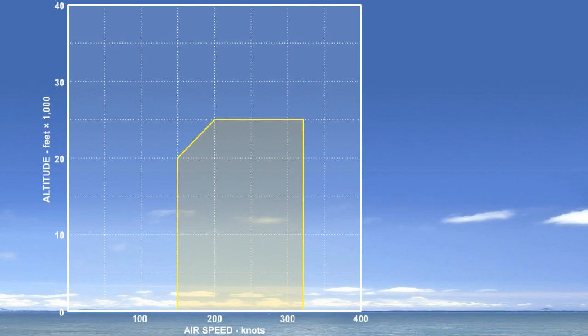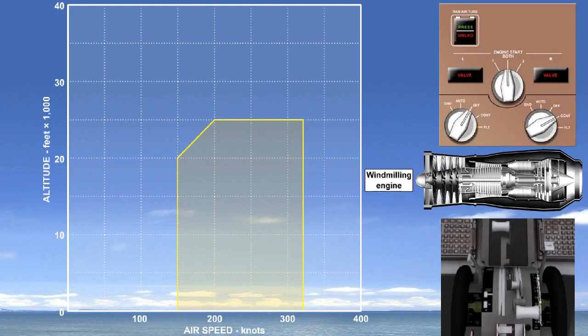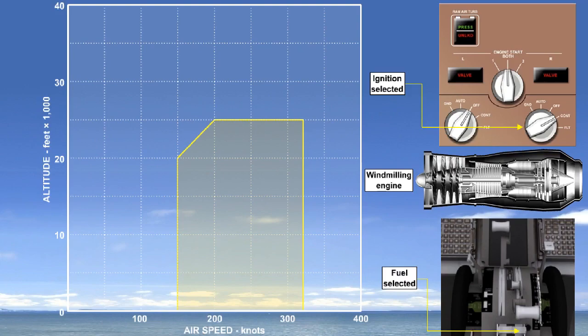This graph illustrates a relight envelope for an imaginary engine, showing the flight conditions under which it would be guaranteed to relight if it was fully serviceable. The airflow through the engine will cause it to rotate or windmill, so the compressor is supplying sufficient air to support combustion. All that is then required is the opening of the high-pressure fuel cock to deliver a fuel supply, and operation of the ignition system to add the final ingredient, a spark.